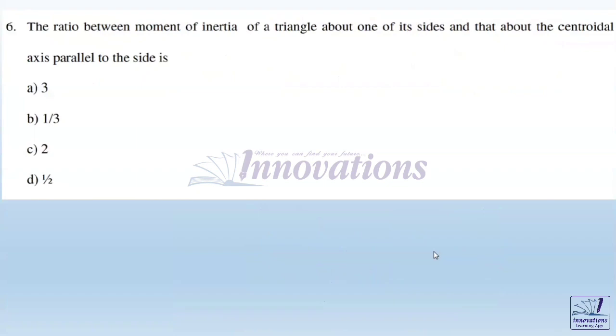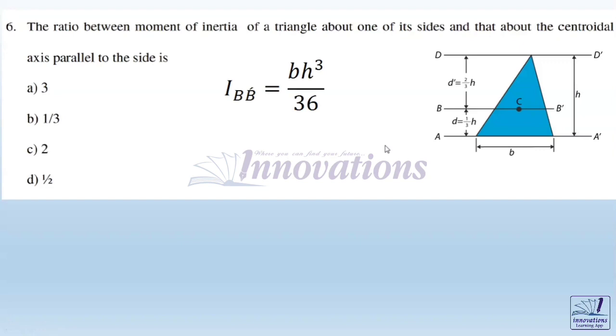First problem: The ratio between the moment of inertia of a triangle about one of its sides and that about the centroidal axis parallel to the side. We need to find the ratio between moment of inertia about A-A dash and the centroidal axis B-B dash.